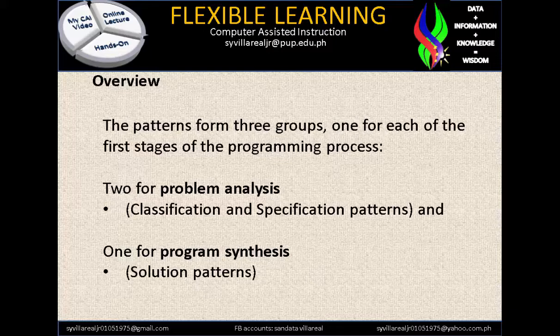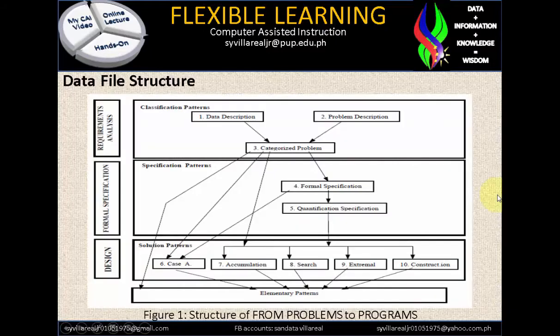We have here the overview. The patterns form three groups, one for each of the first stages of the programming process. Two for problem analysis — if you encounter a problem, you are going to analyze it, and you need two patterns: the classification patterns and the specification patterns. And one for program synthesis, which is what you call solution patterns. In Figure 1, structured from problems to programs, it identifies the flow or framework of how to solve problems through programs.